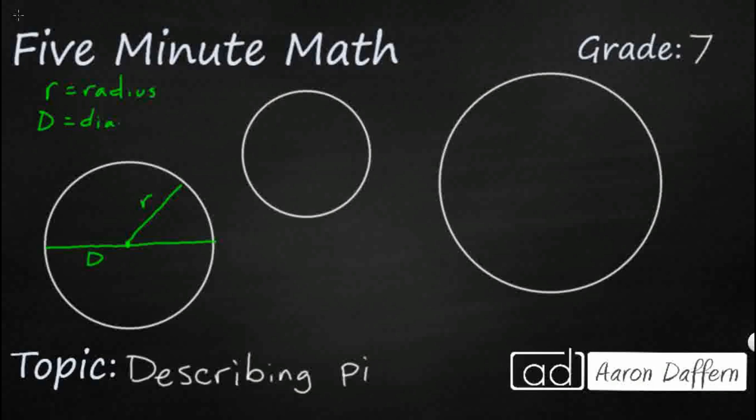So as you can tell, our diameter is going to be twice as long as our radius, because it goes from the middle to either side in a straight line. And then we've got our big number that we are going to need.